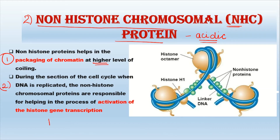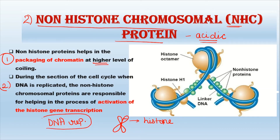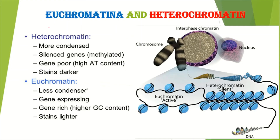The second function of NHC proteins is during DNA replication — when DNA is replicated during cell division and a new copy is made, the genes present in the chromosomes that code for histone protein formation need to be activated. Non-histone proteins activate those genes in the chromosomes that are responsible for forming histone proteins. So indirectly, non-histone proteins help in forming the octamers as well as in super coiling the chromatin fibers, ultimately contributing to chromosome structure.